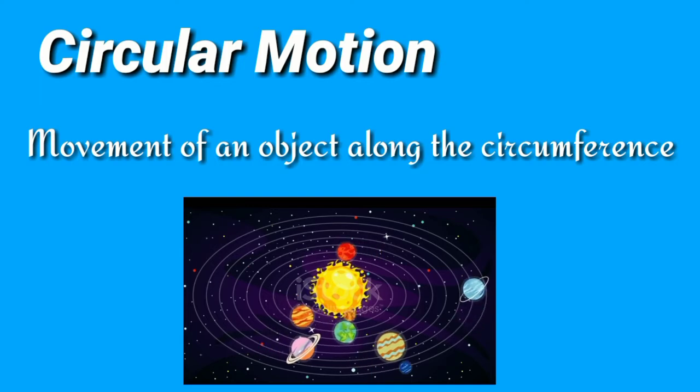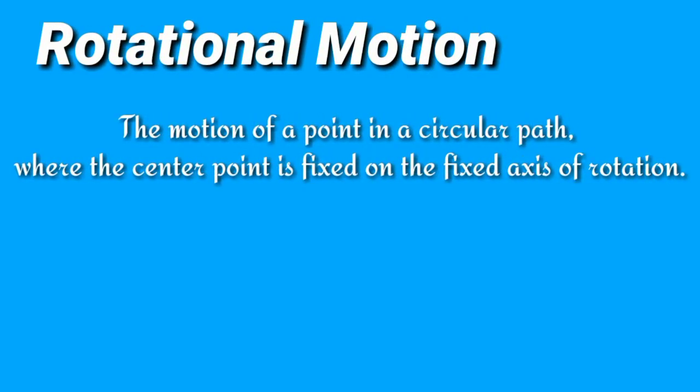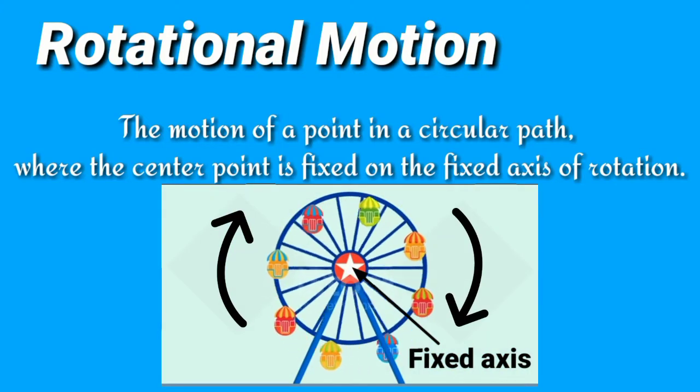See the example. Now rotational motion: the motion of a point in a circular path where the center point is fixed on the fixed axis of rotation. There is the example.